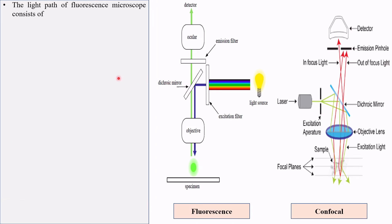The light path of fluorescence microscope consists of light source, excitation filter, dichroic mirror, objective lens, sample, objective lens, dichroic mirror, emission filter, ocular lens.